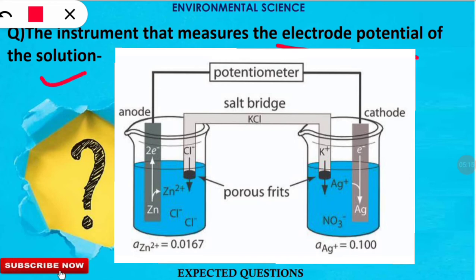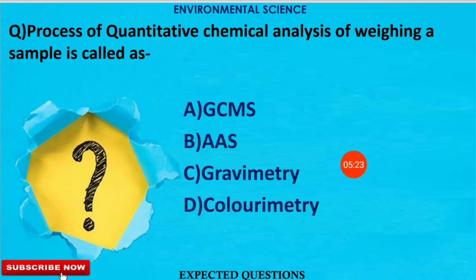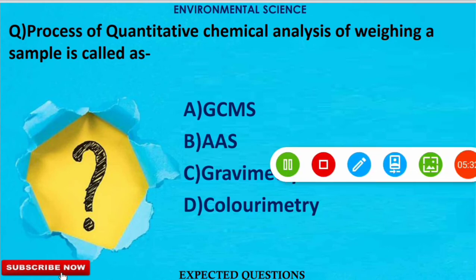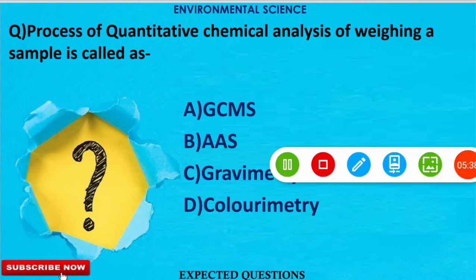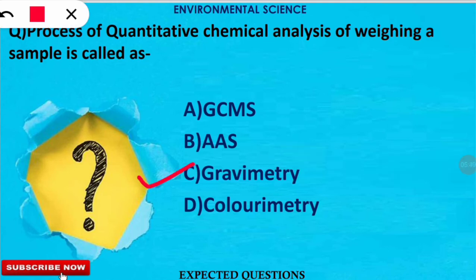The next question is: the process of quantitative chemical analysis by weighing a sample is called what? The answer is gravimetry — option C. Gravimetry is used for the quantitative analysis of chemicals by weighing them.